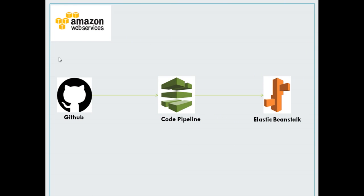First of all we will be creating a GitHub repository — in my case I have already created that repo which I will show you. After that, using this GitHub repository and Elastic Beanstalk we will be creating our web servers, and finally we will be configuring Code Pipeline for continuous integration and continuous deployment. We will see how changes go automatically to our web server once pushed to the GitHub repository, without any human intervention.